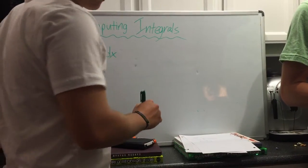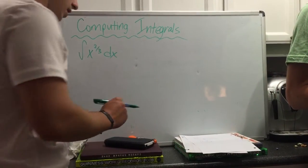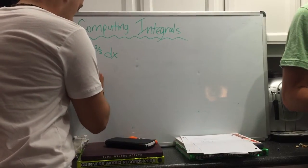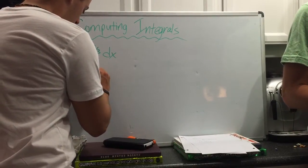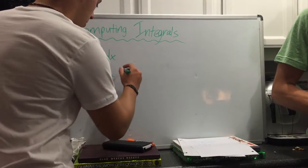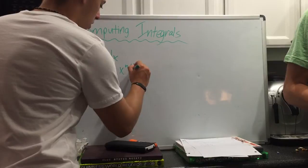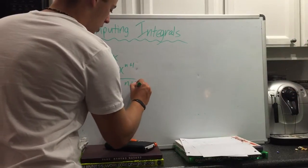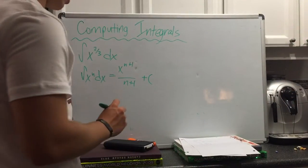We know that one of our identities is the integral of x to the power of n dx. When you take the antiderivative of that, you get x to the n plus 1 over n plus 1 plus c, c being the constant of integration.